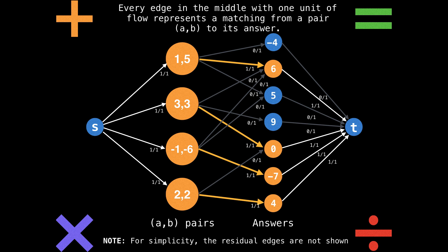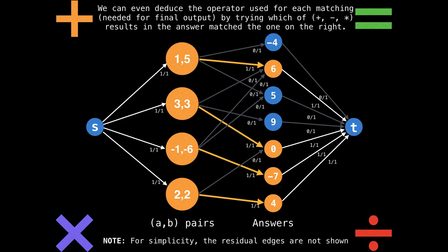For example, the input pair (1,5) was matched to the answer node 6 because there's one unit of flow going through that edge. From this we can even deduce the operator used for each matching, which is actually needed for the final output. This can be done by trying which of the plus, minus, or multiply operators results in the found matching. Basically, we first solve the problem by figuring out which answers we get, and then work backwards to figure out which operator was used.